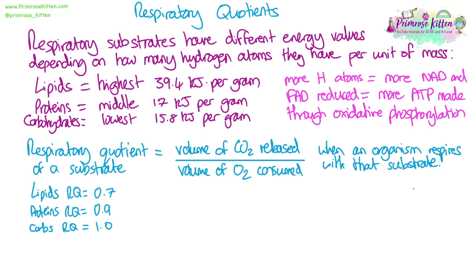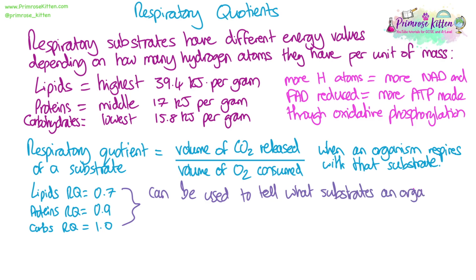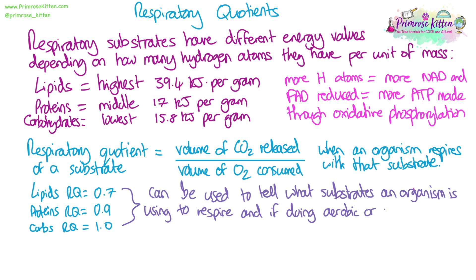We need to know the respiratory quotient values in general: for lipids it is 0.7, proteins 0.9, and carbohydrates 1. These respiratory quotients can be used to tell what substrates an organism has been using to respire and whether they are doing aerobic or anaerobic respiration.